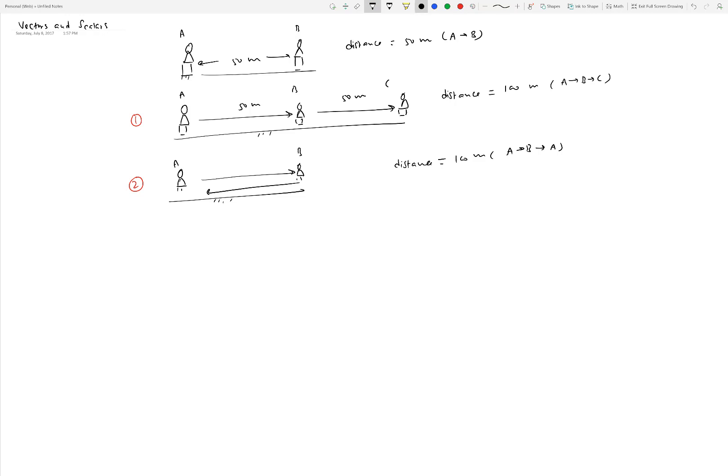In scenario one, displacement, the difference between final and initial position, is 100 meters, same as distance. But in scenario two, displacement is zero. You cannot equate distance with displacement. In day-to-day conversation you might use them synonymously, but they are different.